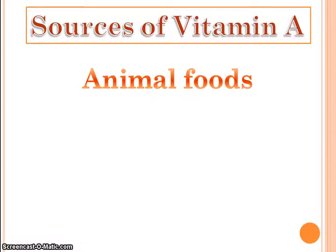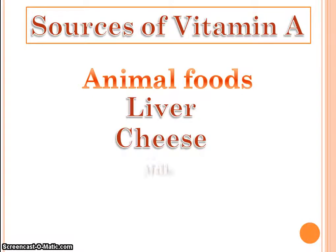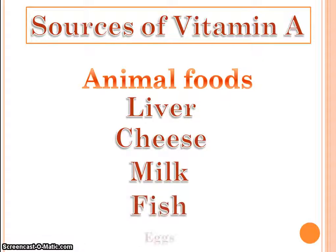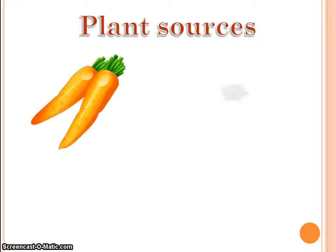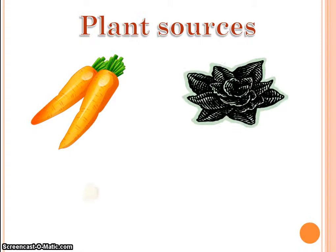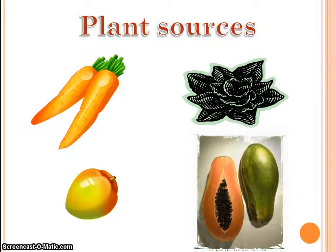Sources of vitamin A include animal foods such as liver, cheese, milk, fish, and eggs. Plant sources of vitamin A are carrot, spinach, mango, and papaya.